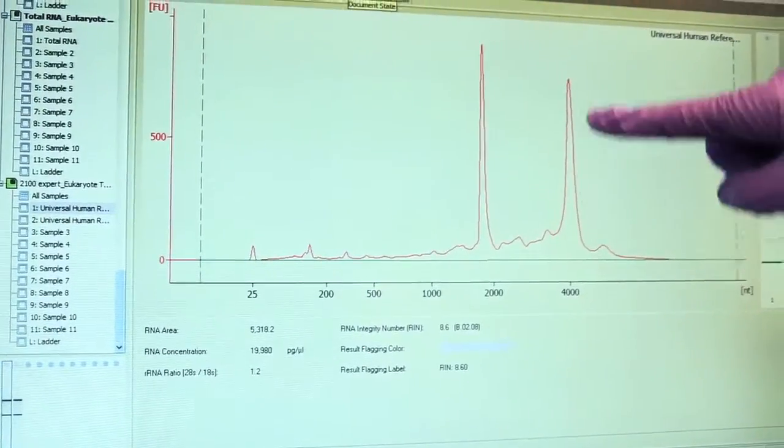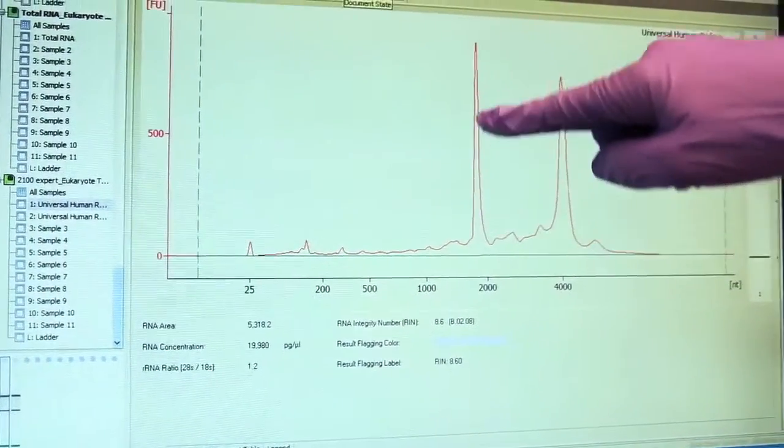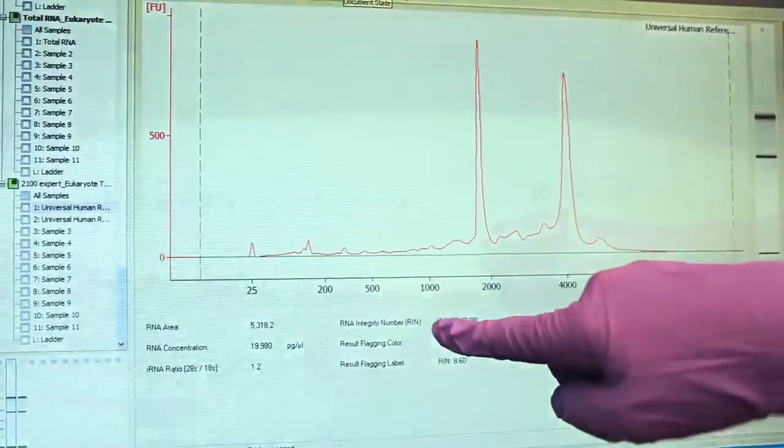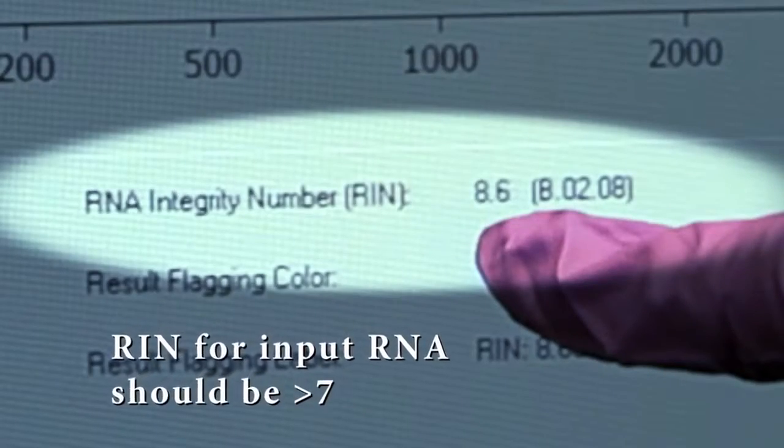We recommend determining RNA quality by using the RNA integrity number estimated by the Agilent Bioanalyzer. The sample should have a RIN number or RNA integrity number higher than 7.